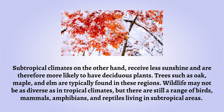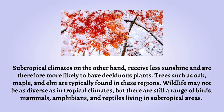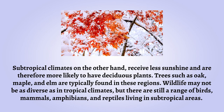Subtropical climates, on the other hand, receive less sunshine and are therefore more likely to have deciduous plants. Trees such as oak, maple, and elm are typically found in these regions. Wildlife may not be as diverse as in tropical climates, but there are still a range of birds, mammals, amphibians, and reptiles living in subtropical areas.